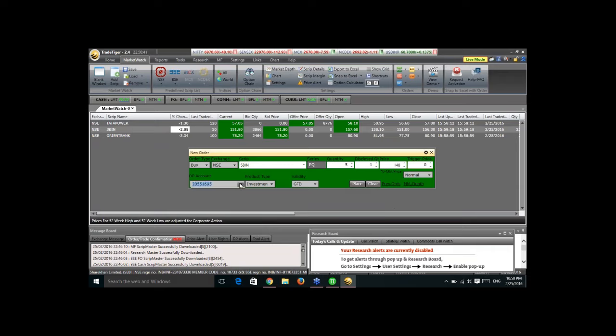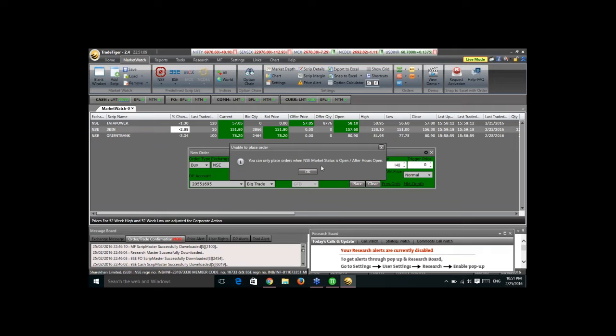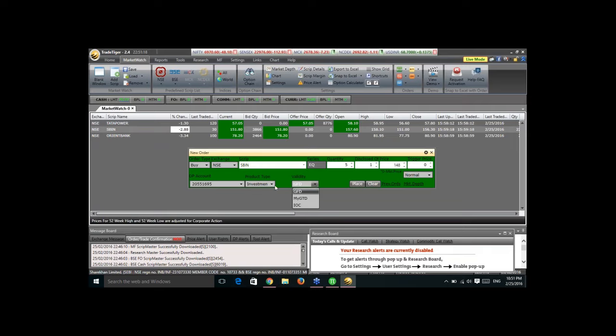Now, you have two options here. Now, there is your DP account. Now, product type. Investment or big trade. Investment means you want to do a delivery based trading or holding based trading. So, you buy the share, you keep it forever, for one month, ten months, whatever you wish. More than one day. And, big trade means I want to buy today and sell today. So, for intraday, I select this thing and place the order. It will take my order. Currently, it's telling the market is closed. But, if we select investment, then this validity is activated. Now, if I select here big trade, the validity is locked. Now, if I select investment, the validity is open. Now, what is validity?